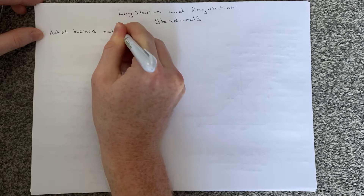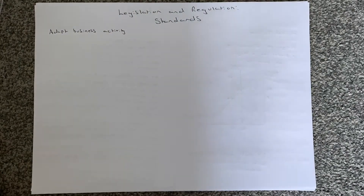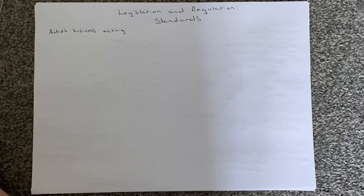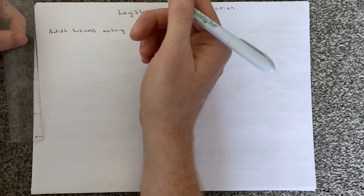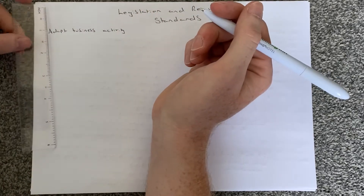Basically, if a business has to adapt its behaviour based on certain standards, that is probably going to cost the business a certain amount of money because they're going to have to change what they're doing to a new process, and that is going to come at a cost. There are two different diagrams we can use to demonstrate how a business would be impacted by these certain standards.